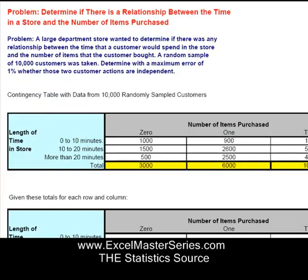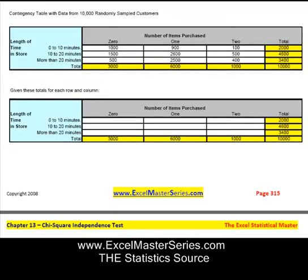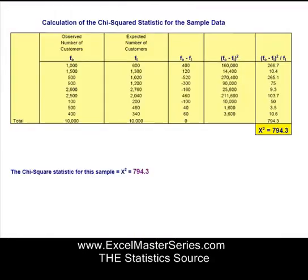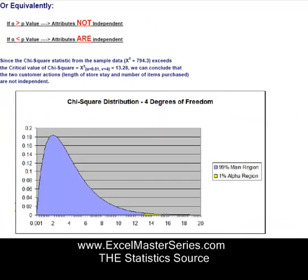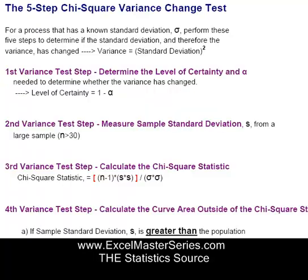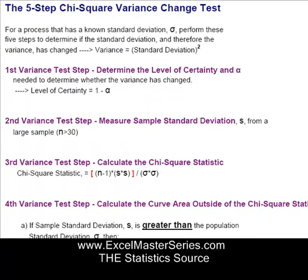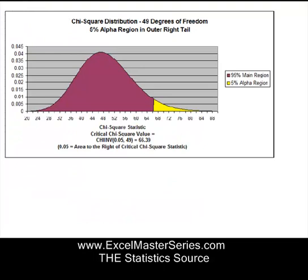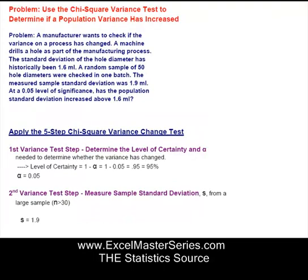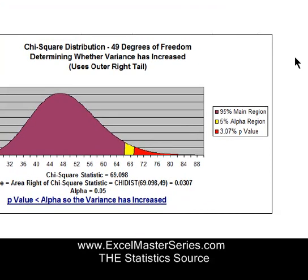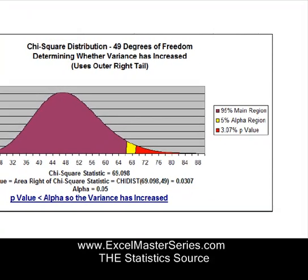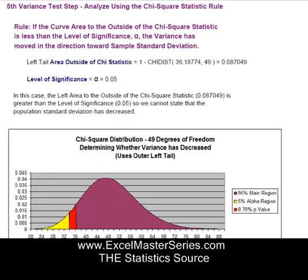Here's the chi-squared independence test — we walk through showing how to set that up in Excel. It's not very complicated once you see how to do it. Each worked-out problem is shown with lots of screenshots and a detailed but simple explanation of what we just calculated, plus a graph at the end. Here's the five-step chi-square variance change test — a couple of problems in this chapter, each using the five-step process, with a graph at the end of each problem and everything explained simply, step-by-step.